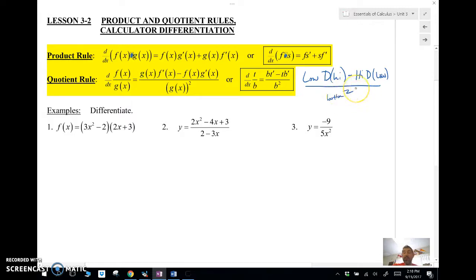And away we go. So it goes like this: low d high minus high d low, square the bottom and away we go. That's the low d high rule. That's the quotient rule.